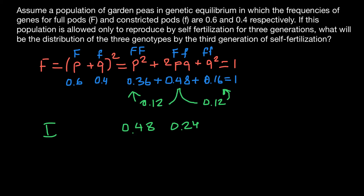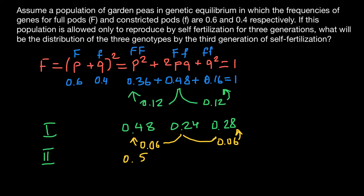In Generation 2, again 50% of the heterozygosity is lost. Half of 0.24 is 0.12, so 0.06 is redistributed to each homozygote. The frequencies in Generation 2 are: homozygous dominant 0.54, heterozygous 0.12, and homozygous recessive 0.34.